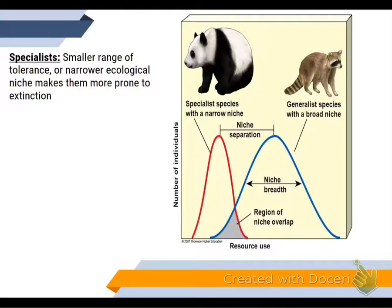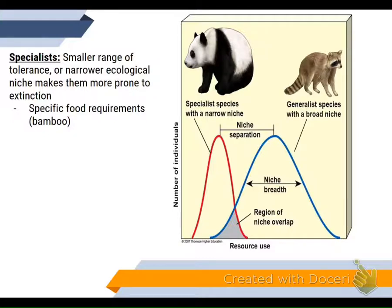Specialists have a very, very small niche. They can only live in a specific place, specific climate, and so forth, which makes them more prone to extinction. They have specific food requirements — the panda has to have bamboo. No bamboo, no panda. If conditions change, such as global climate change or the Three Gorges Dam flooding the bamboo, they go extinct.